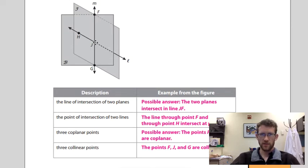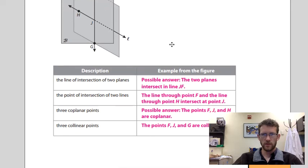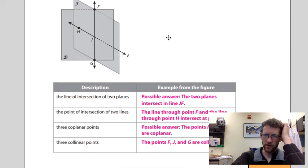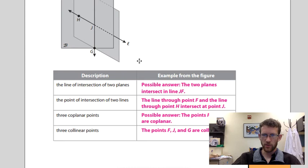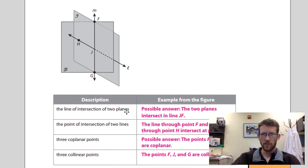Three coplanar points. Basically, the only, well, J is right here in the middle, so you could say HFG or any three points. They're all coplanar. All listed ones are in this center plane. Three collinear points: the only three that are collinear are F, J, and G.